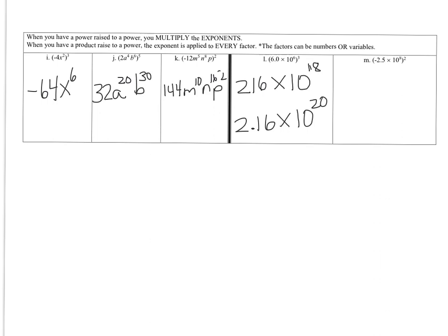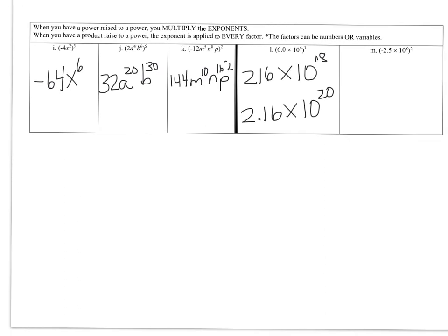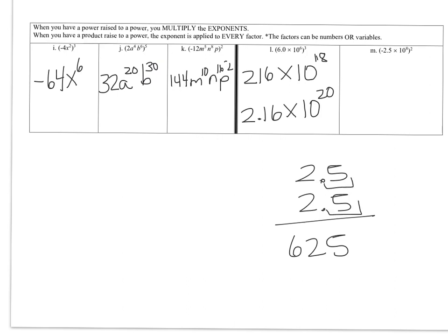We're squaring everything: negative 2.5 times 10 to the 8th, squared. Do negative 2.5 times negative 2.5 — that's essentially 25 times 25, which is 625. But since it's 2.5 times 2.5, with two decimal places total, it becomes 6.25. The answer is 6.25 times 10 to the 16th, because you multiply the exponents on the 10.